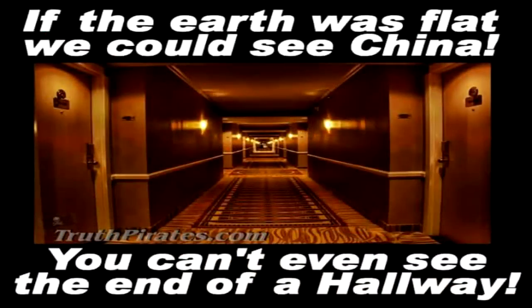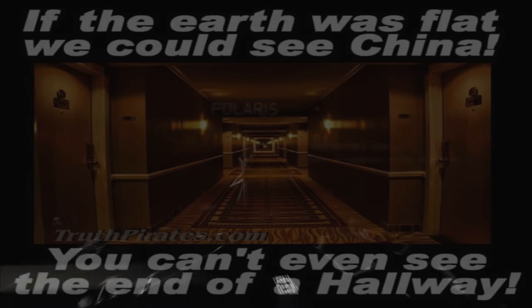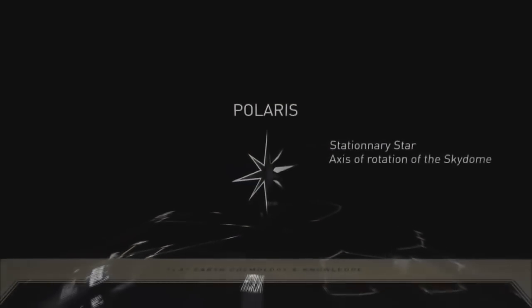Furthermore, globe-earthers always mention visibility issues specifically with Polaris, because it can only be seen by observers north of the equator, which could seemingly fit their narrative of disappearing due to curvature. Many other stars and constellations, however, are visible for a much wider spectrum of observers, far beyond what would be possible on a globe.